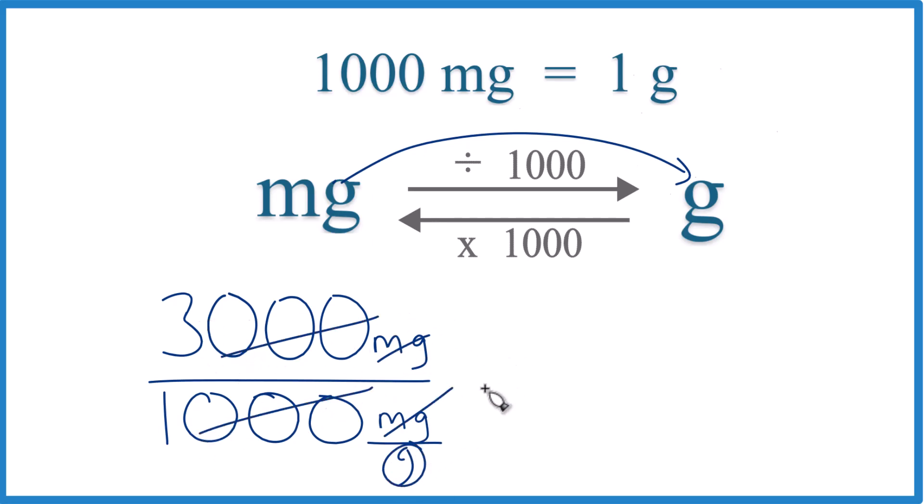Get rid of these, 3 divided by 1, that's 3. And the unit's right down here, grams. That's it.